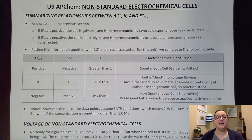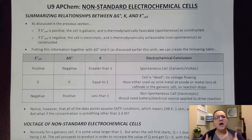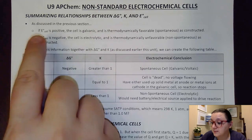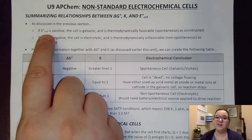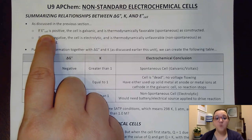In our previous video, we discussed calculating the electromotive force, also known as the cell potential of an electrochemical cell. And we said that that value gives us some information about the drive to move electrons in a particular direction for a reaction.